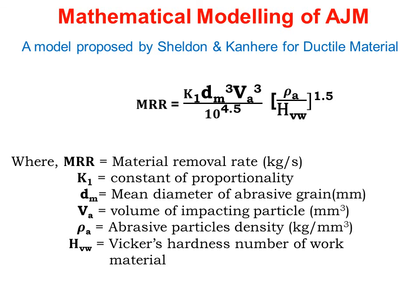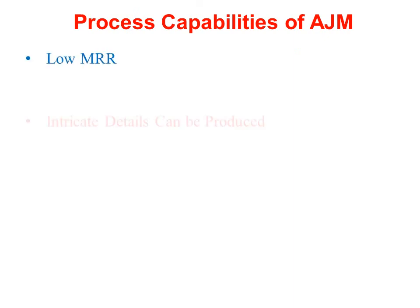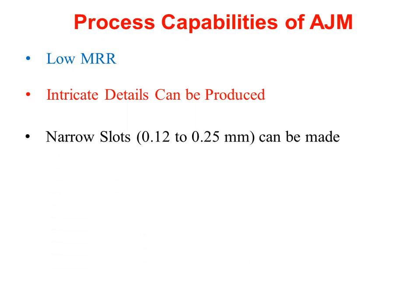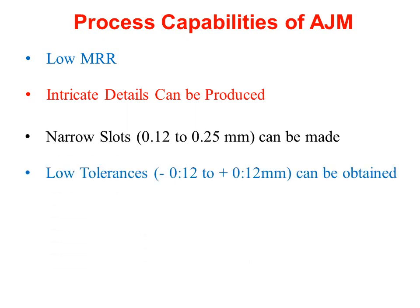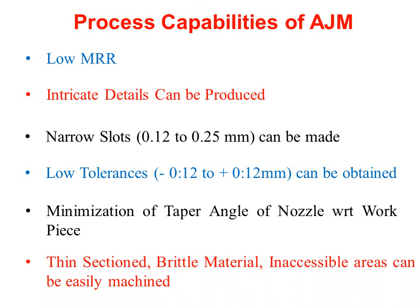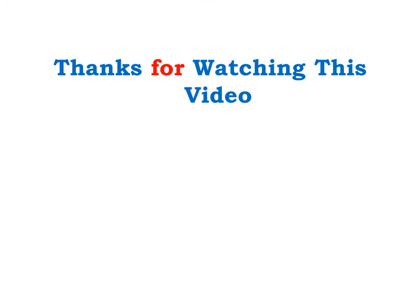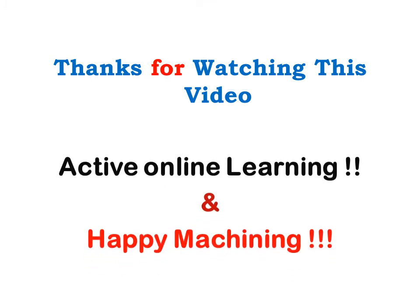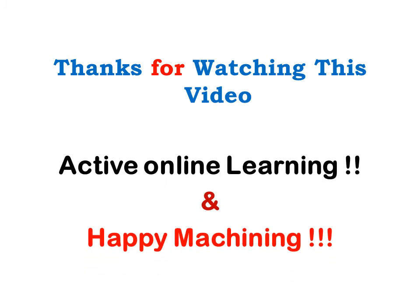Process capabilities of AJM: low MRR, intricate details can be produced, narrow slots can be made, low tolerances can be obtained, minimization of taper angle of nozzle with respect to work piece, thin sectioned brittle materials and inaccessible areas can be easily machined. Thanks for watching this video — active learning and happy making.